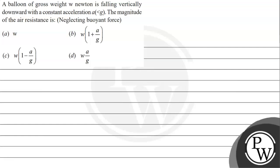Hello, let's read a given question. The question says a balloon of gross weight w newton is falling vertically downward with a constant acceleration a that is less than g.